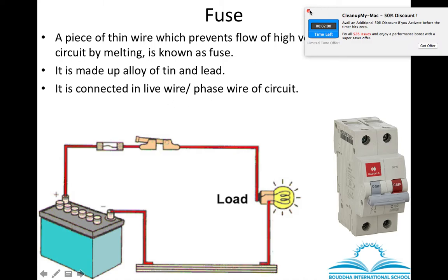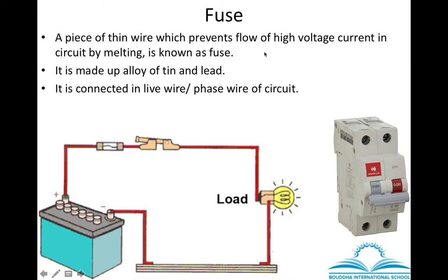In a circuit there are two wires: one is called the live wire and the other is called the neutral wire. The wire through which current flows is called the live wire. Since current flows through the live wire, the fuse must always be connected in the live wire.